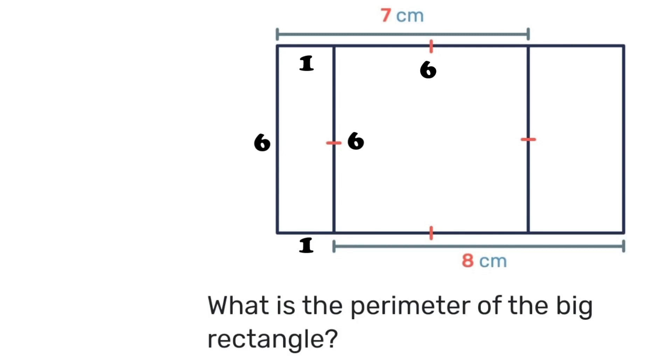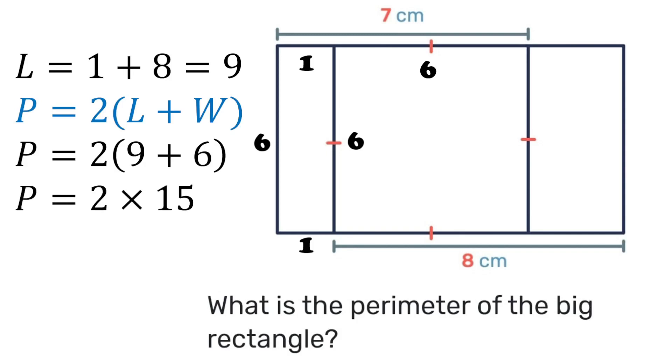So if that is 1 and that is 8 down below we know that the length of the rectangle will be 9. So the perimeter is 2 times length plus width. So the 9 is the length and the 6 is the width. 9 plus 6 is 15. 2 times 15 gives you 30 centimeters. So that's what we get with our first guess.